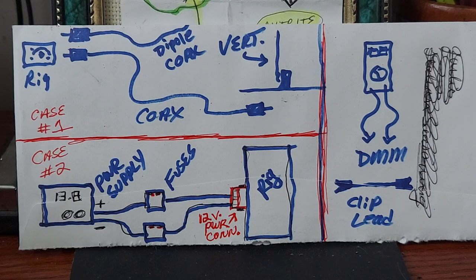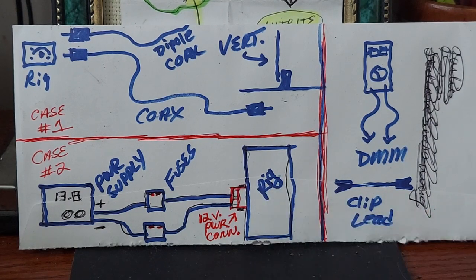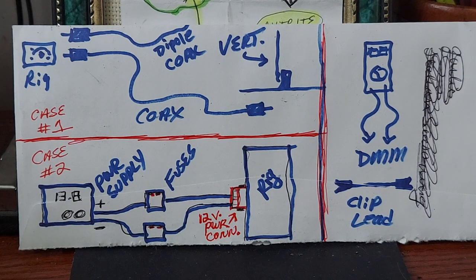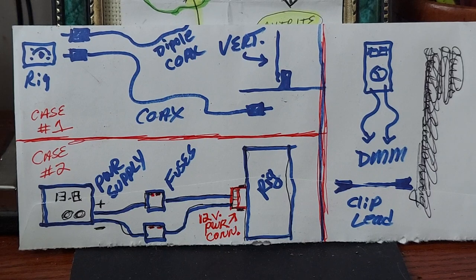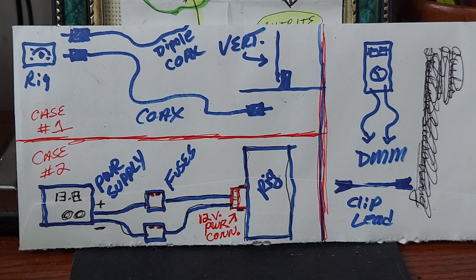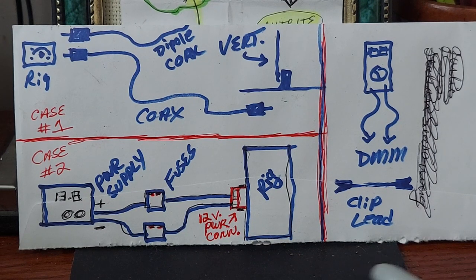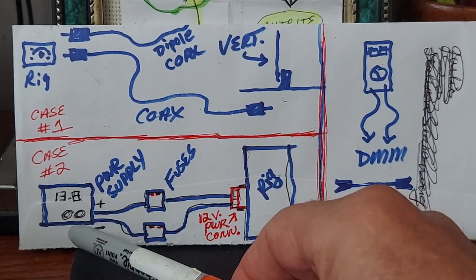Case number two. Here's the conditions. Rig receives fine. You can grab the mic and throw out your call sign using single sideband and everything's fine. But you try to run FT8 or use CW, the rig reboots. What are you going to do? How are you going to troubleshoot that?